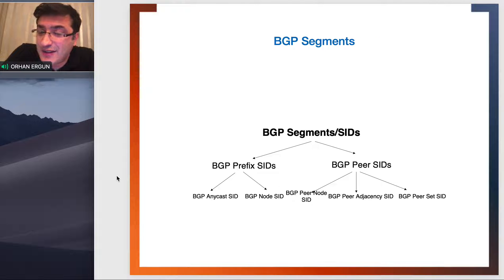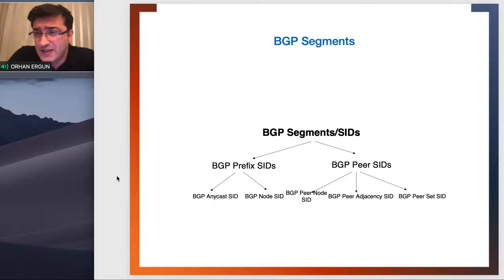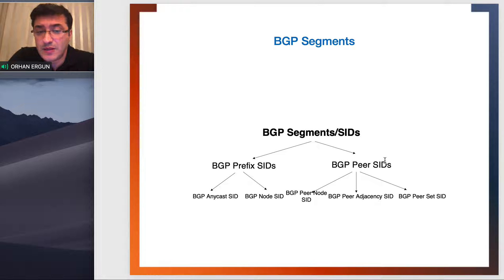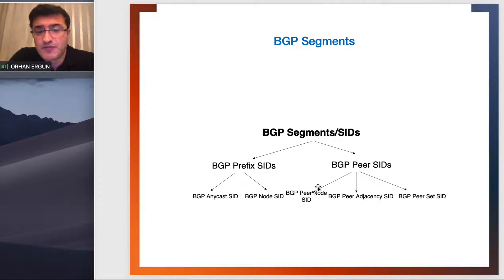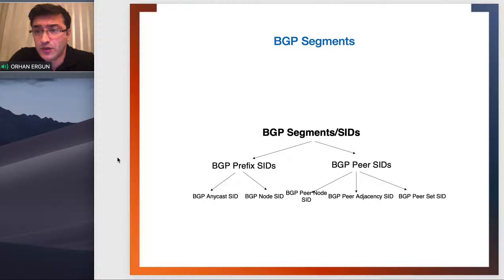So the chart I showed you with the IGP segments — now for BGP segments let's look at what types of segments we have. We have prefix segments and peer segments with BGP. On the left we also had prefix segments and adjacency segments; now prefix and peer segments will fall under your BGP SIDs. When it comes to prefix SID, node SID, and anycast SID, it's the same as for IGP — nothing different. When it comes to peer SID, we call it peer node; we also have peer adjacency and peer set SIDs, which we will look at.